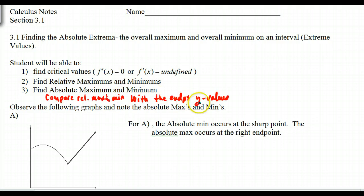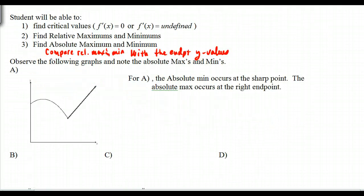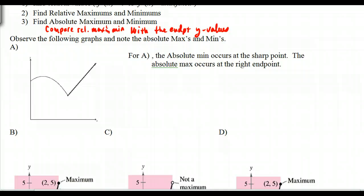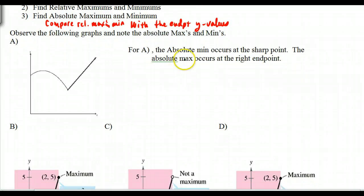Endpoint y values. See which one's the biggest, see which one's the littlest. So the absolute min occurs at the sharp points. So I'm looking at this one right here. If I look at this, the absolute minimum does occur at that sharp point. That means that f prime of x was undefined, and if f prime of x is undefined, we do have that sharp point, and so that's a possibility that will give us an absolute max or absolute min.